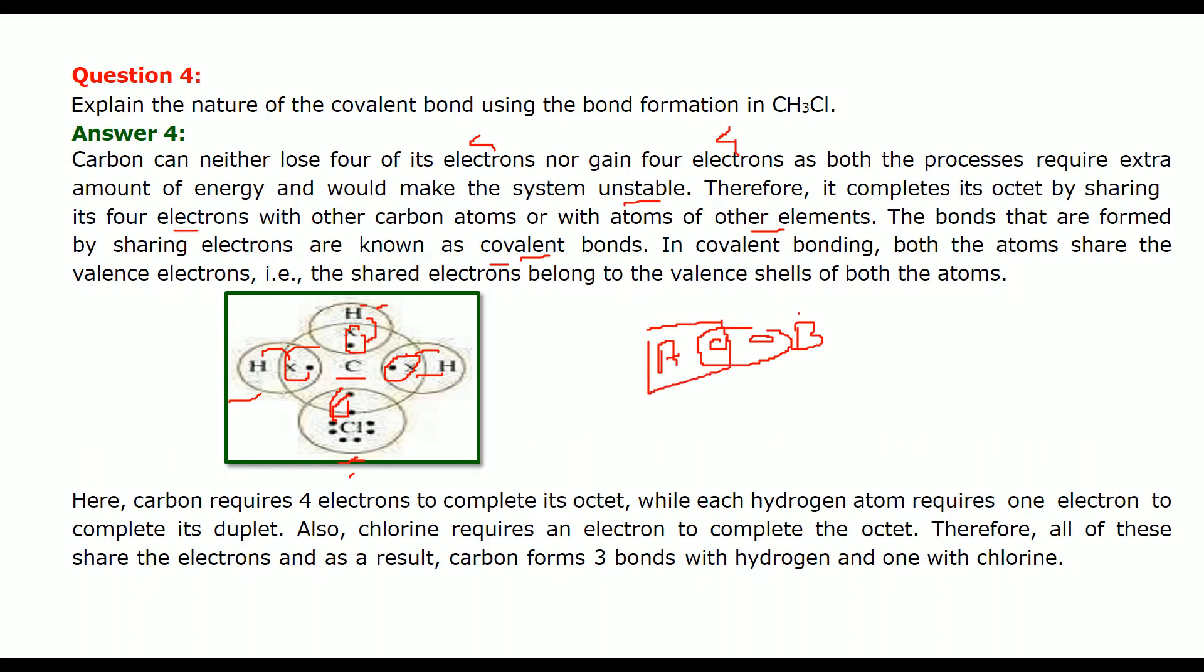The shared electrons being the valence shell of both the atoms. This is A's, this is B's. So carbon requires 4 electrons to complete the octet. What about hydrogen? Hydrogen atom requires 1 electron to complete its duplet. Hydrogen is completing its duplet here. And what about chlorine? Chlorine requires electrons to complete the octet. So it already has 6 or 7 and this 7th one will combine with this one. So it will make its own octet 8. So all these cases share the electron as a result. Carbon forms 3 bonds with hydrogen. 1 this one, 2 and 3. And then 1 with the chlorine which you see here.